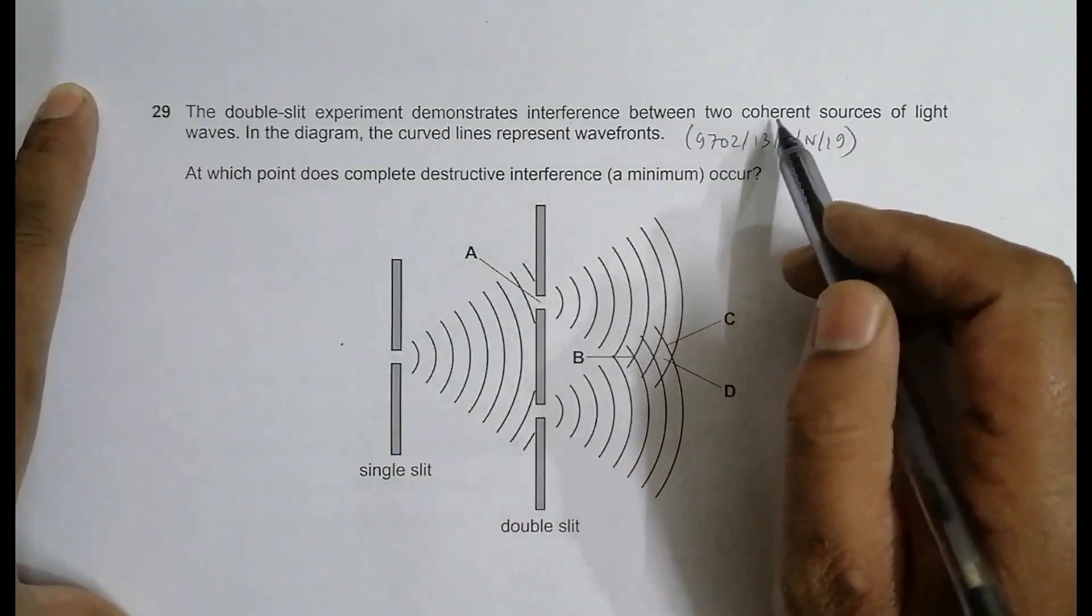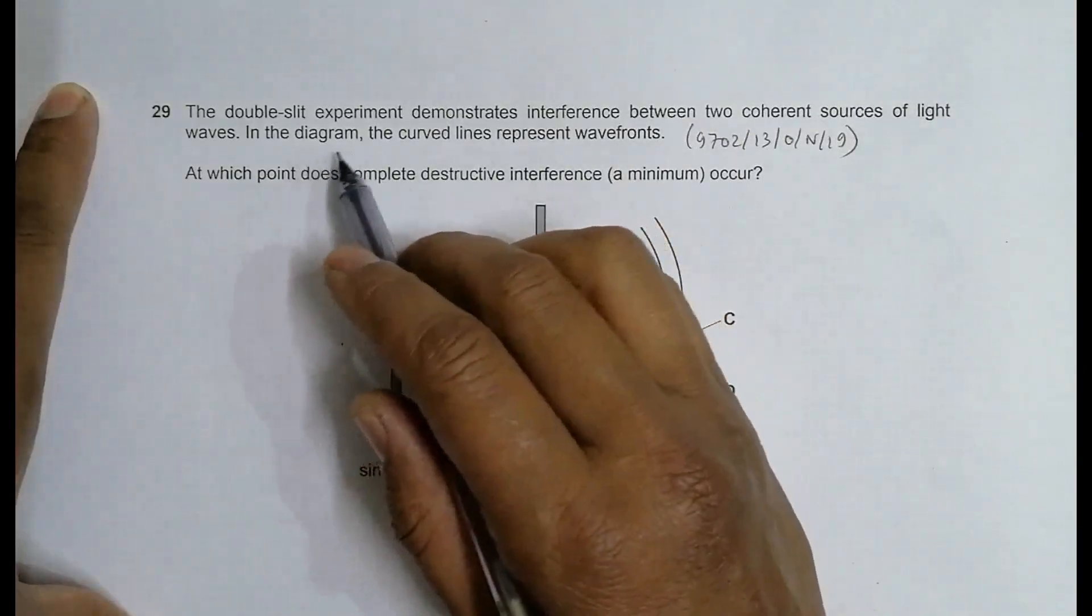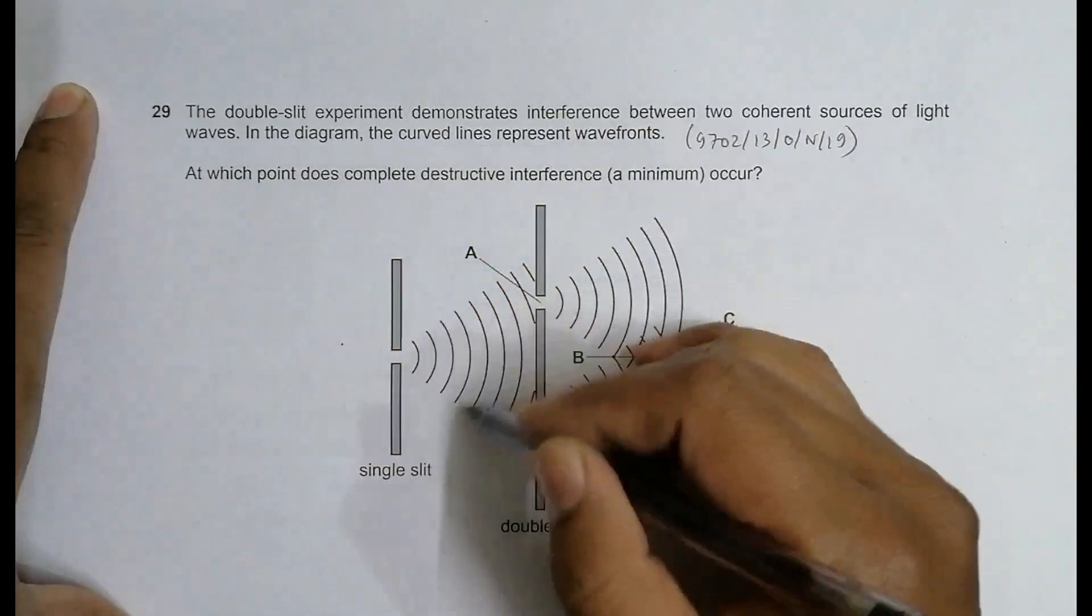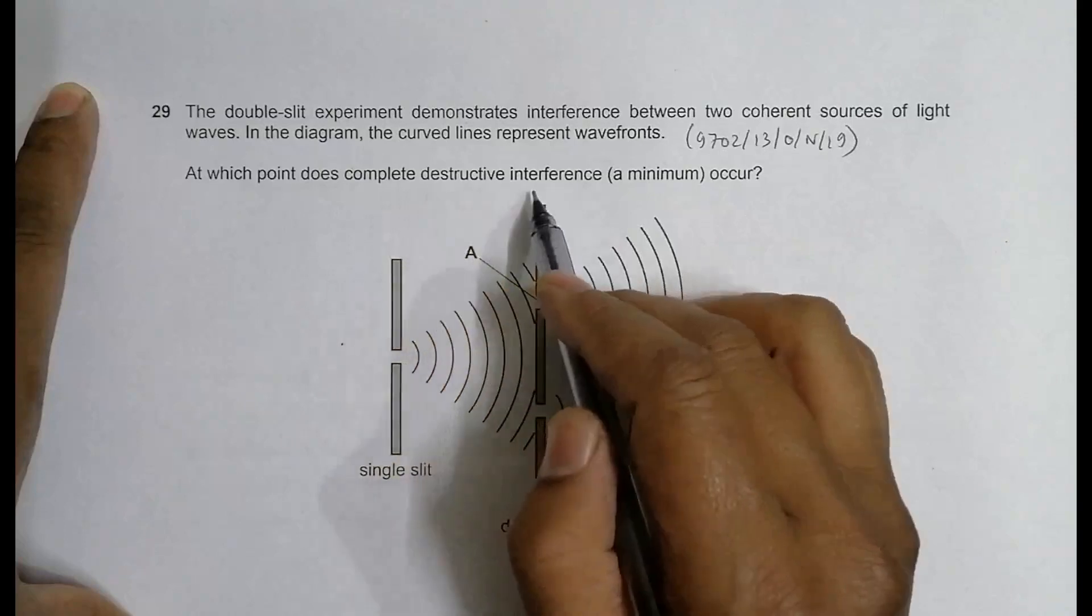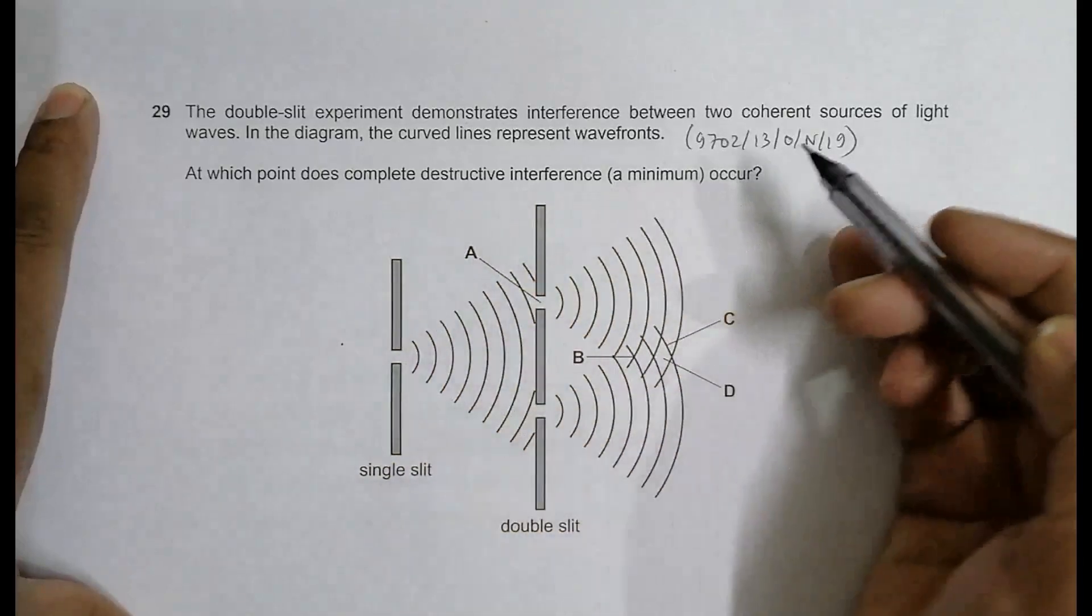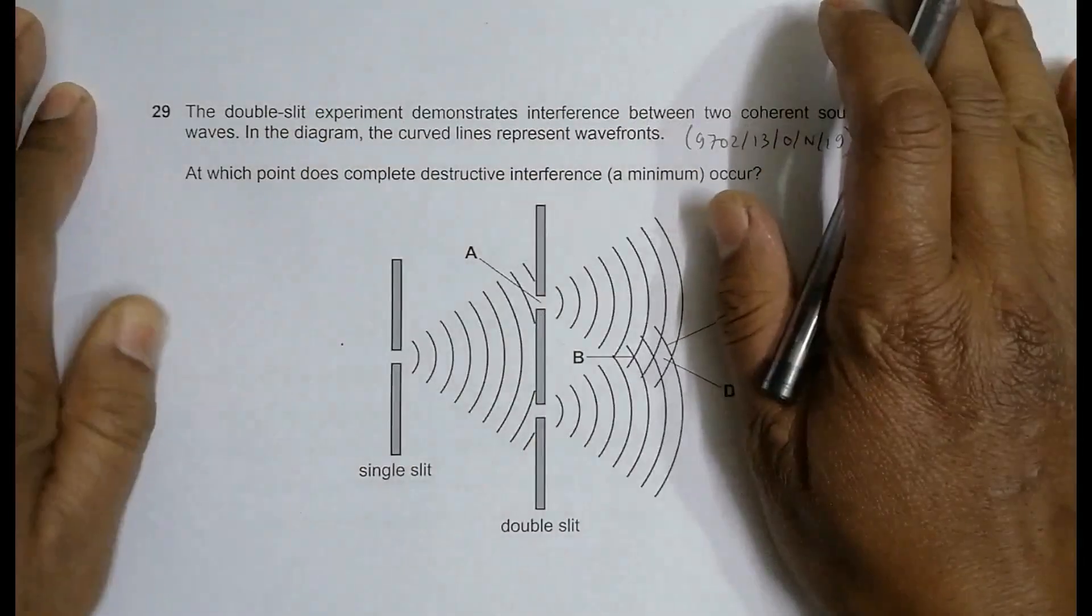The double slit experiment demonstrates interference between two coherent sources of light waves. In the diagram, the curved lines represent wavefronts. At which point does complete destructive interference or a minimum occur?